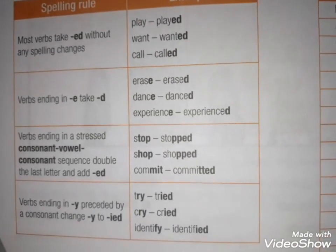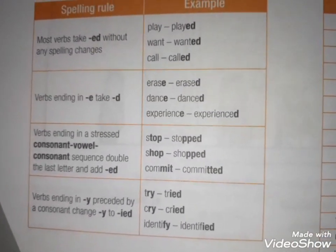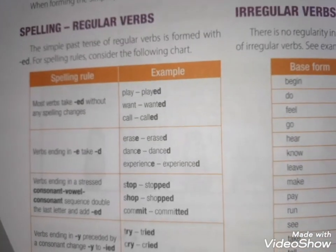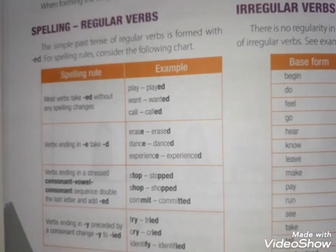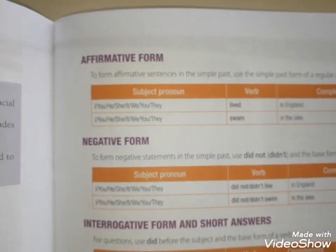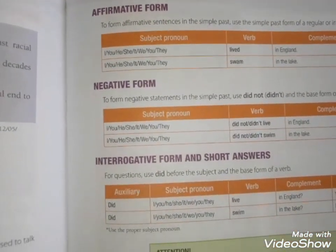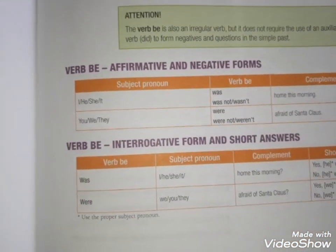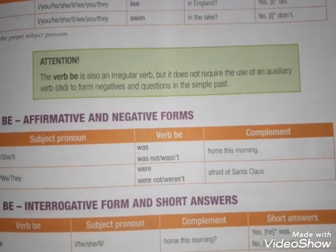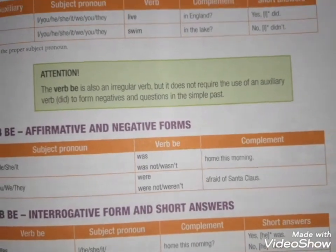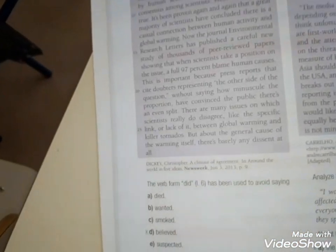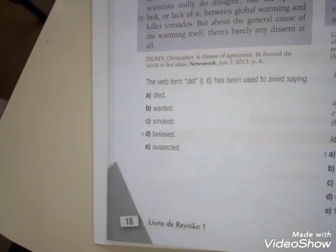Verbos terminados em sílaba tônica com consoante-vogal-consoante, a gente dobra a última consoante. Verbos que terminam em E, a gente somente acrescenta o D. Vimos na página 17 a estrutura afirmativa, negativa e interrogativa. Vimos também que o verbo TO BE se transforma em WAS para singular e WERE para plural. Fizemos os exercícios da página 18 e da página 19.